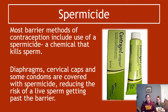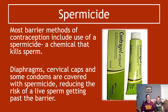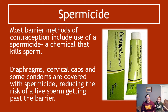Spermicides kind of do what they say on the tin. Most barrier methods of contraception include the use of some kind of spermicide — it's a gel or cream that kills sperm when they come into contact with it. It's like a herbicide for sperm. When you use diaphragms or cervical caps, and even some different condoms, they have spermicides on them, and when sperm comes into contact with the spermicide, the sperm die.